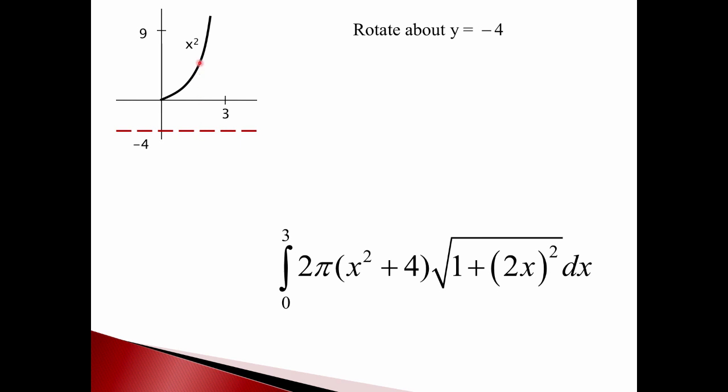And so that distance is, again, big number minus little number, x squared minus negative four. So the circumference is 2 pi R, where the R is x squared plus four. Then we have the square root of one plus the derivative squared dx. That's the arc length part.